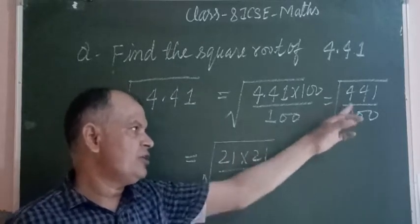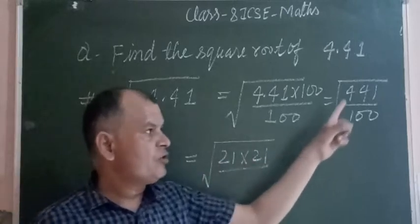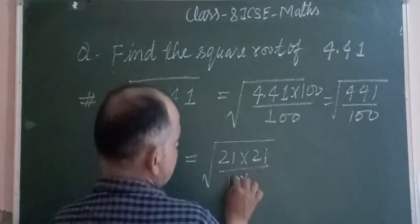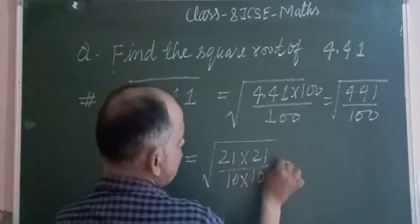21 times 21: first 21, then carry 2, you have 42 plus 42 equals 441. And 100 is the multiplication of 10 times 10.